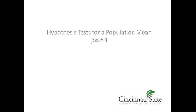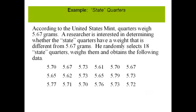Welcome back. In this video we'll walk through one more example of a hypothesis test for a population mean. According to the United States Mint, quarters weigh 5.67 grams. A researcher is interested in determining whether the state quarters have a weight that is different than 5.67 grams, so he randomly selects 18 state quarters, weighs them, and obtains the data shown here.